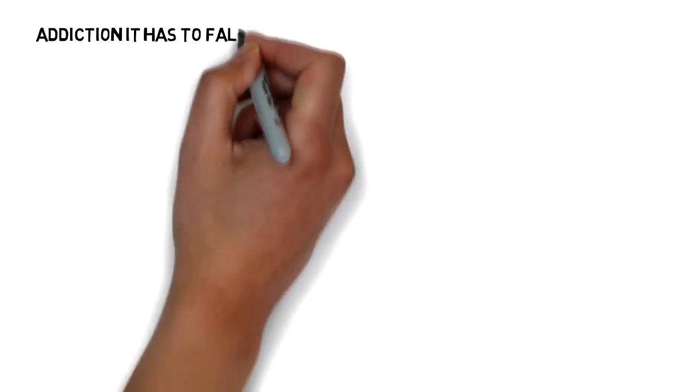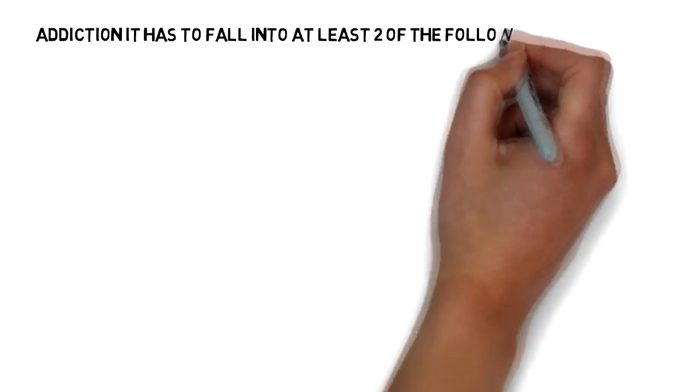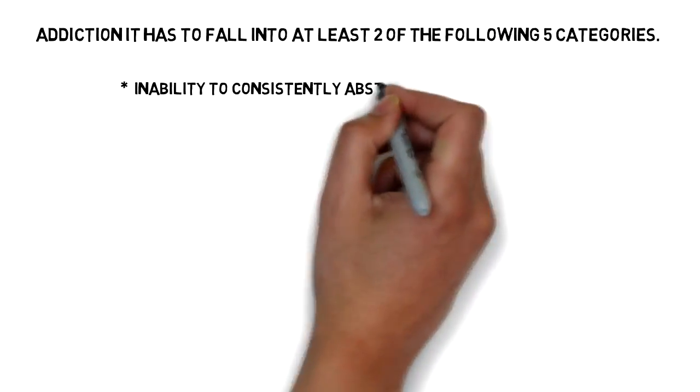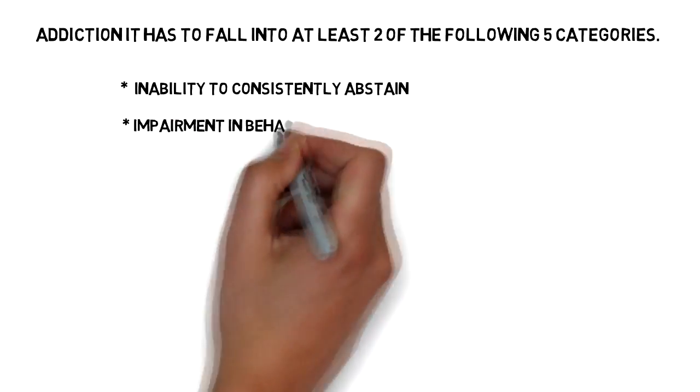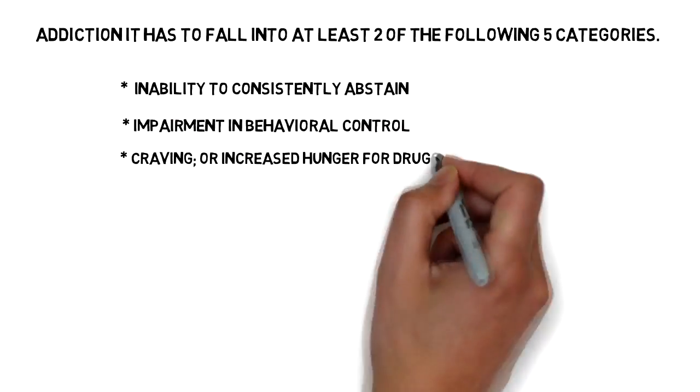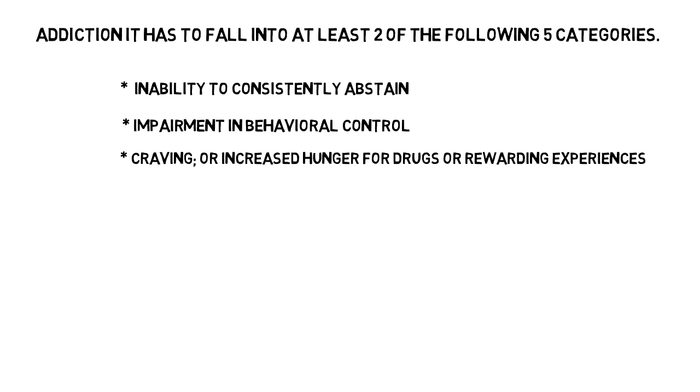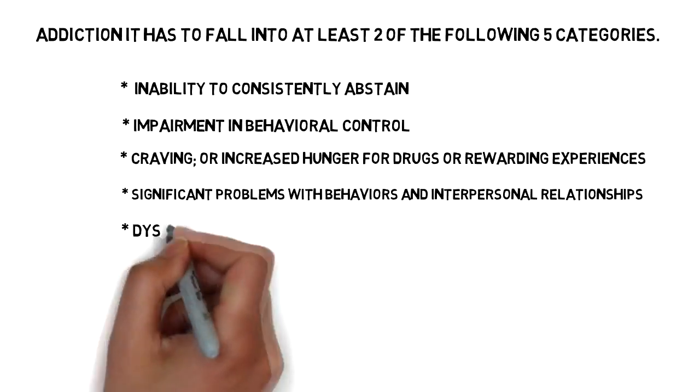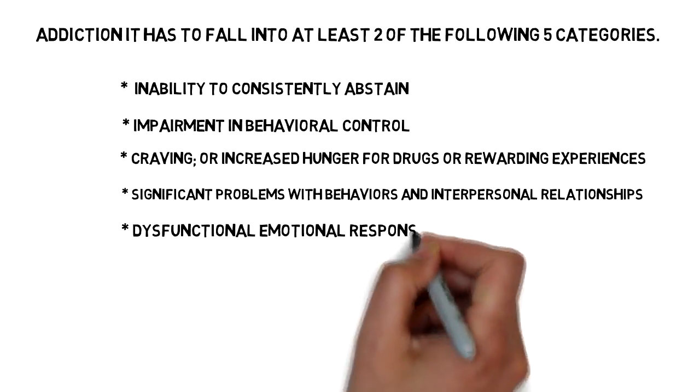For something to be classified as an addiction, it has to fall into two of the following five categories: first, being the inability to consistently abstain; impaired in behavioral control; craving or increased hunger for the drug or rewarding experience; diminished recognition of significant problems with one's behavior and interpersonal relationships; and a dysfunctional or emotional response.